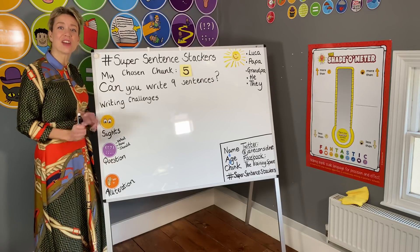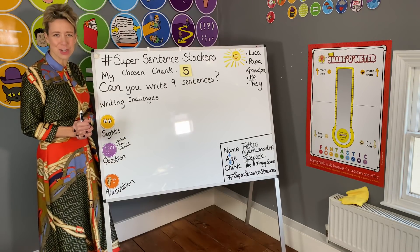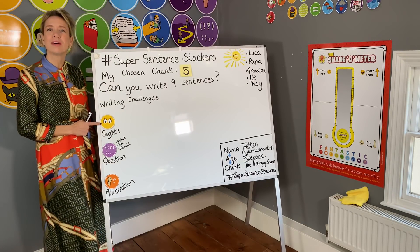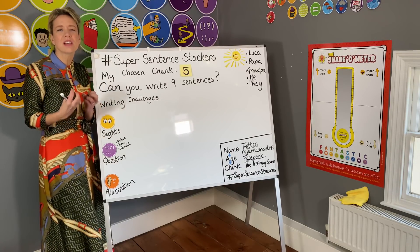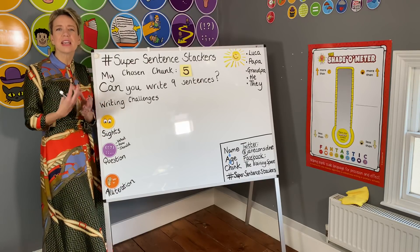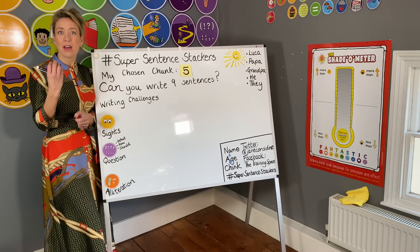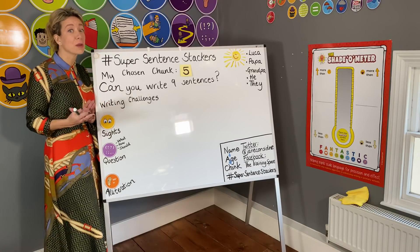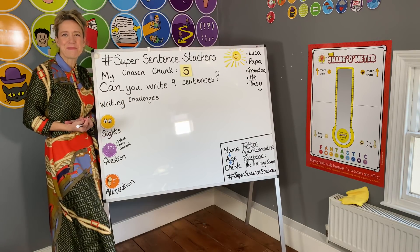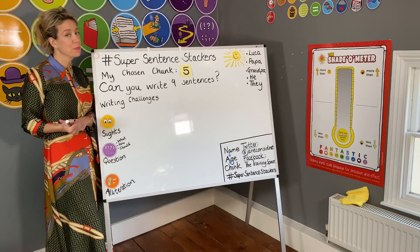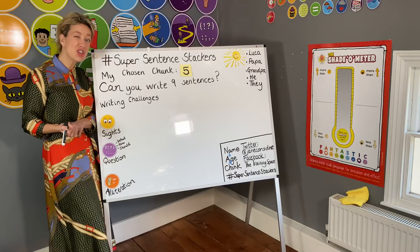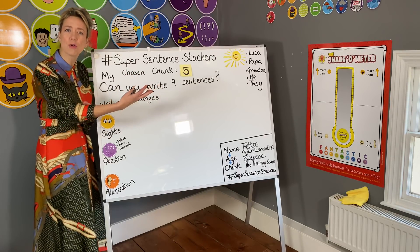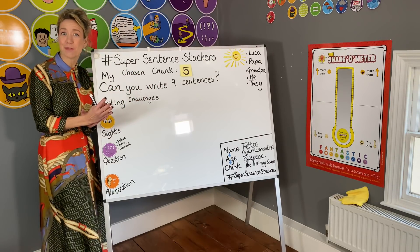Here are today's three writing challenges. Writing challenge number one: I'm going to ask you to include a richness of sights. We're going to really consider what Luca, our central character, sees on his adventure. Some things are going to be positive and some things are going to be negative, depending on which chunk you're writing. Let your vocabulary show the reader if you're trying to evoke something positive or negative.